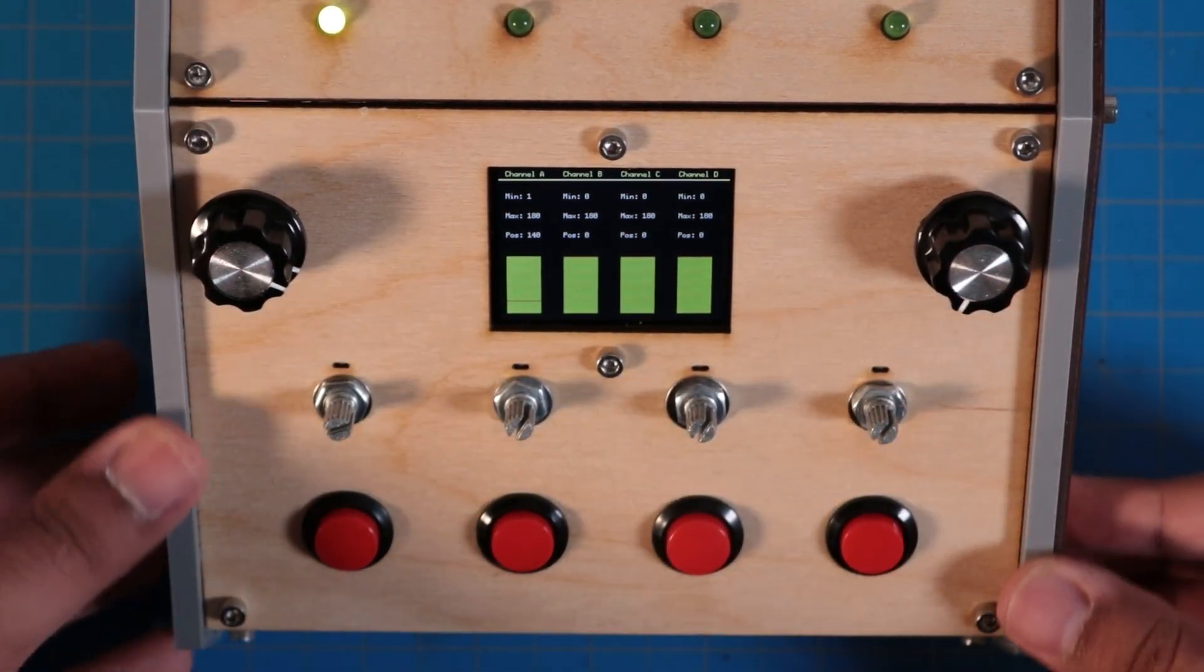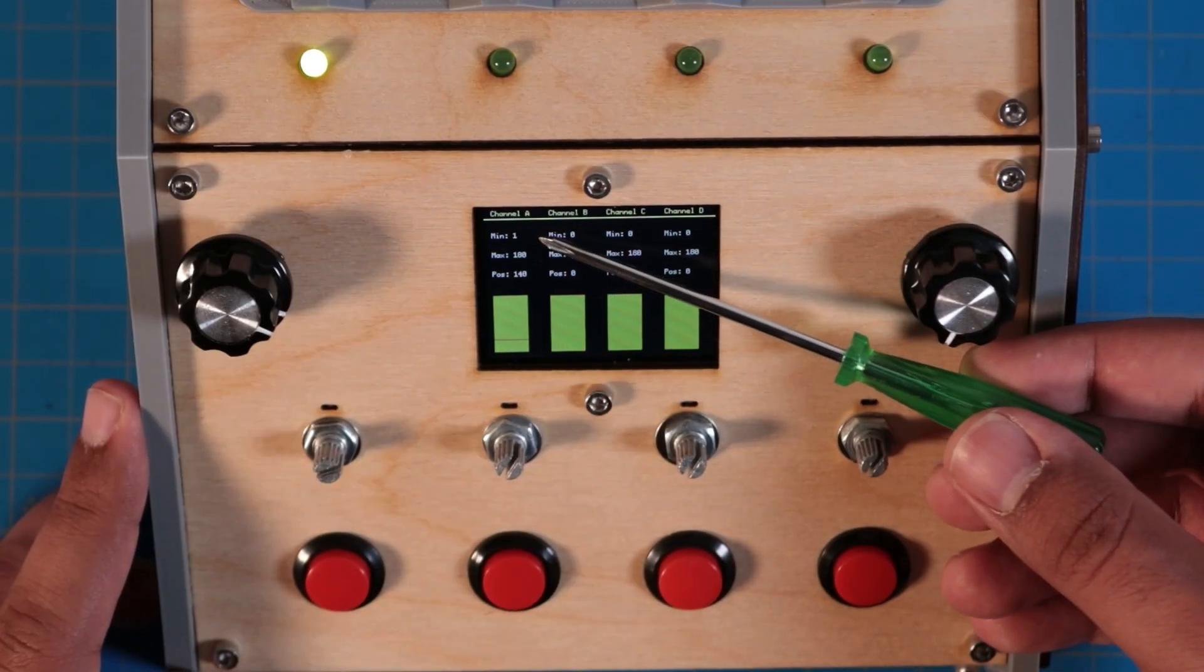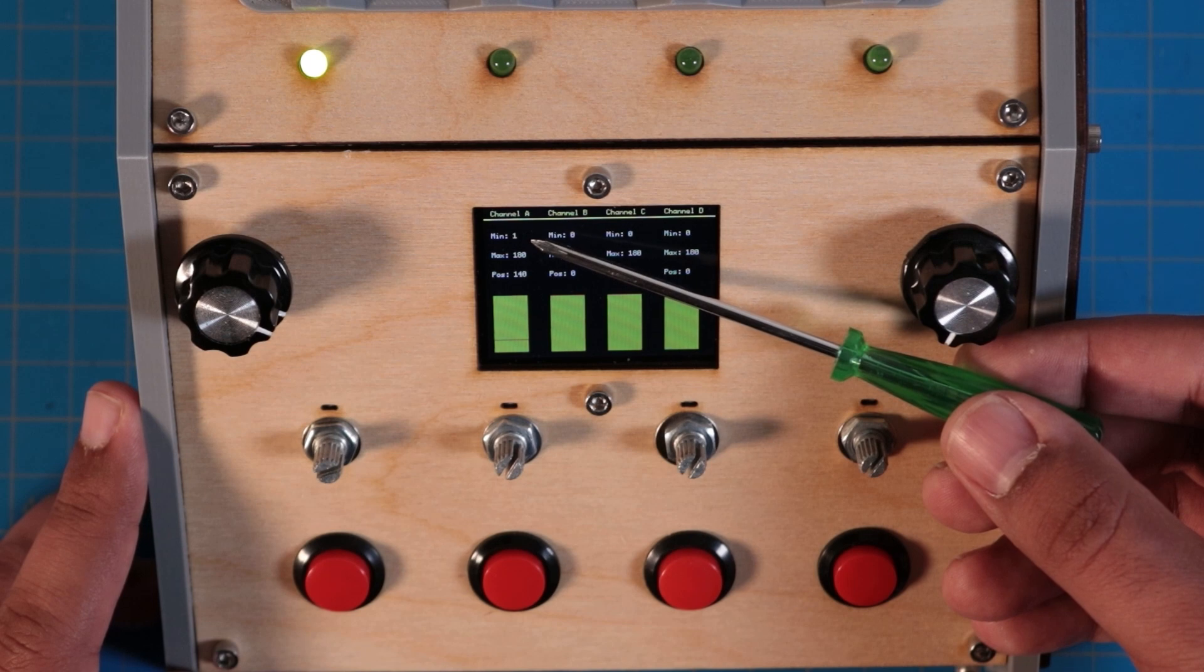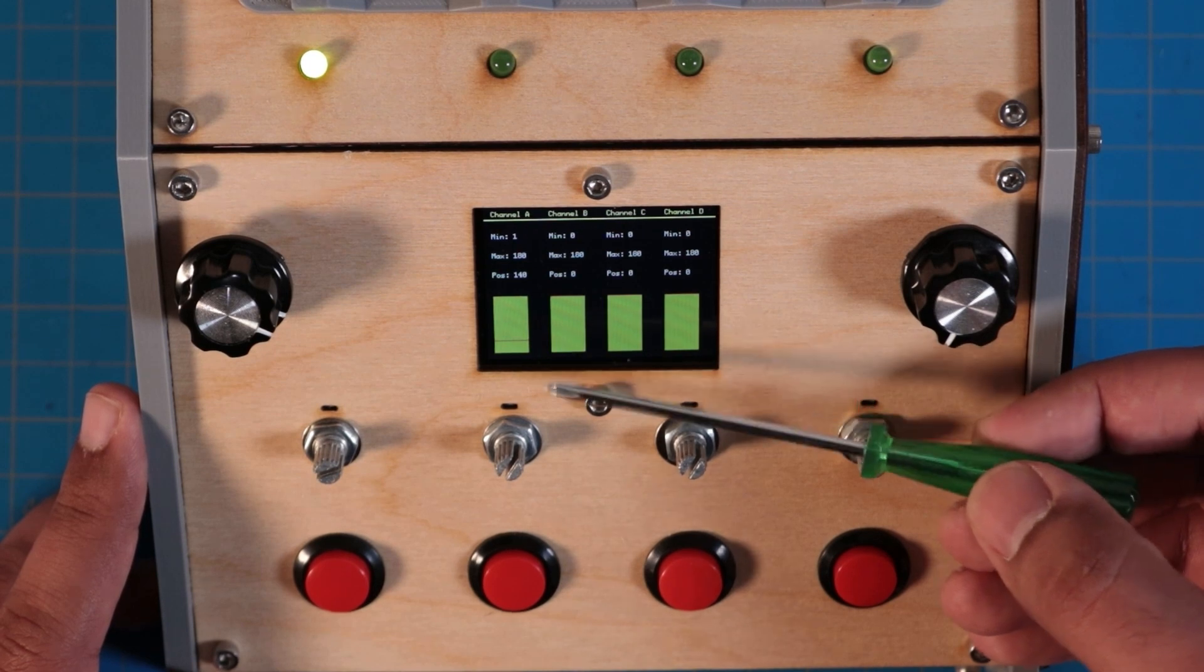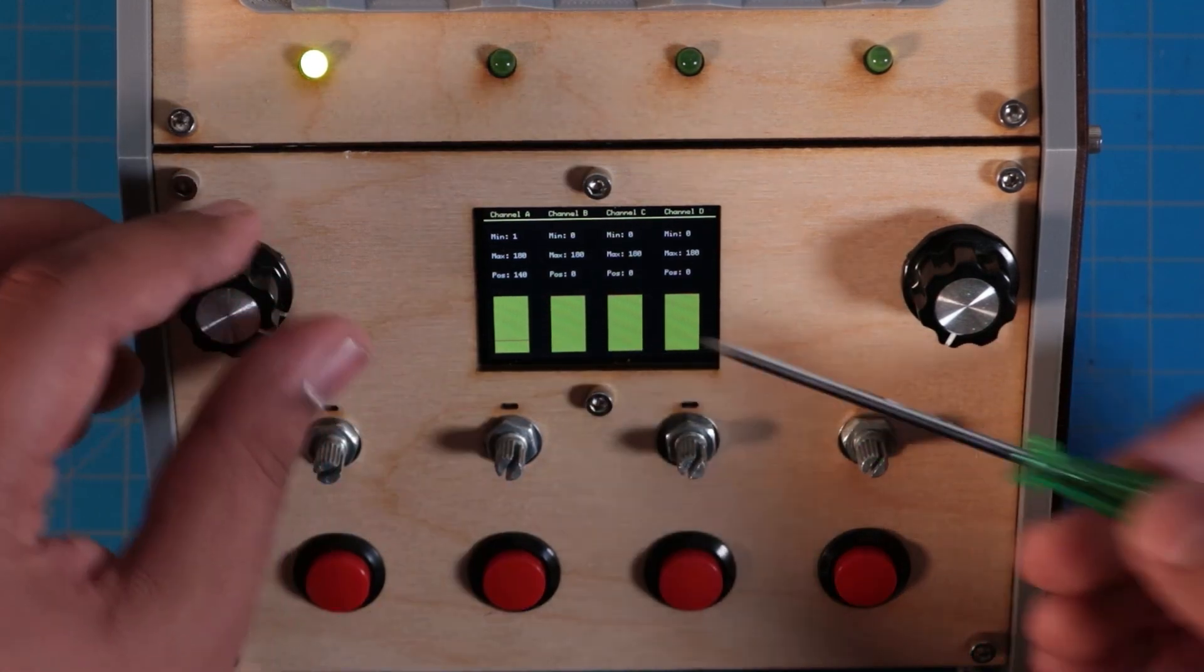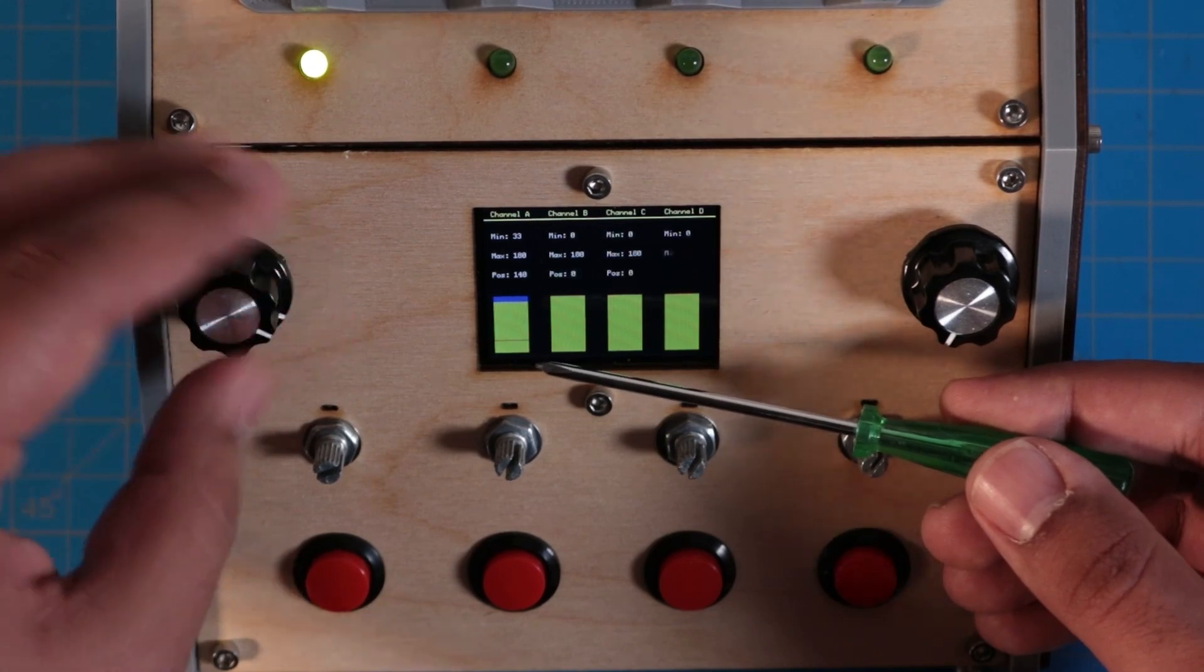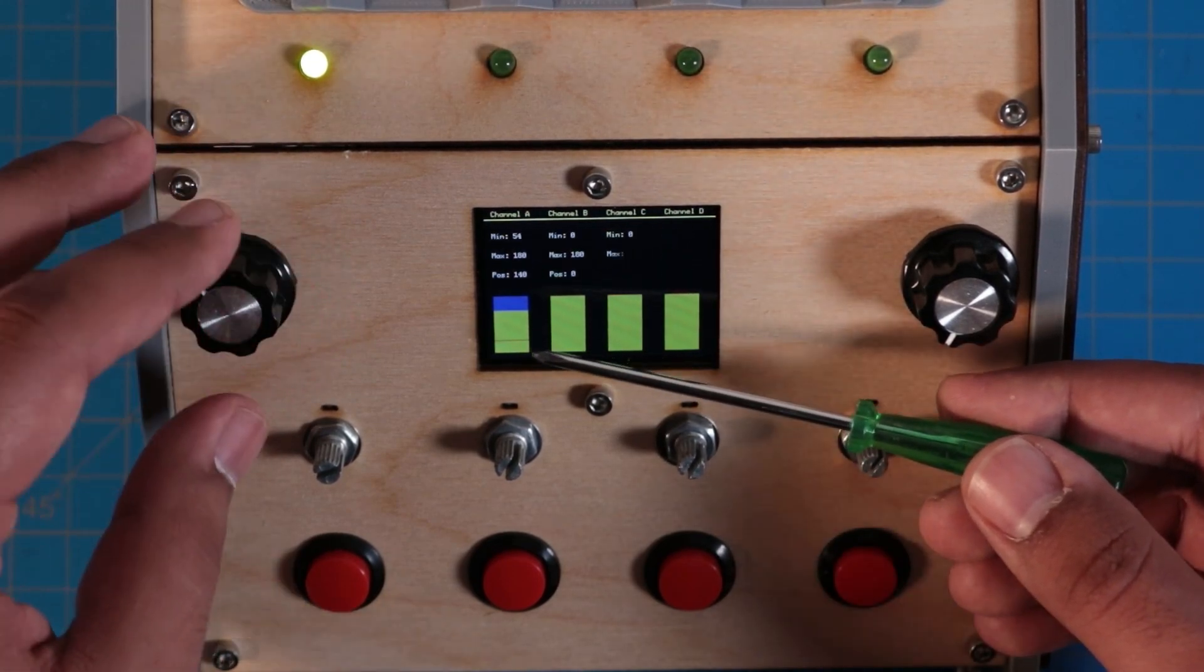Let's take a look at the user interface. It's pretty bare bones and I've kept it simple. We've just got our channel label, the minimum range value, our maximum range value, our current servo position, and just a little graphical slider illustrating the servo's position. If I dial that in—ugh, this refresh rate is killing me. But it does the job.